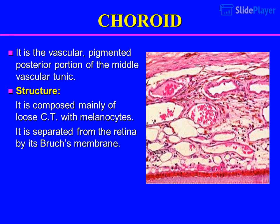Choroid: it is the vascular, pigmented posterior portion of the middle vascular tunic. It is composed mainly of loose connective tissue with melanocytes. It is separated from the retina by Bruch's membrane.